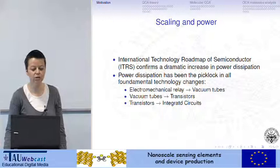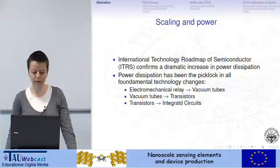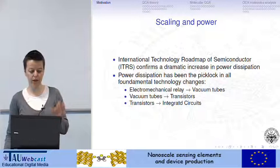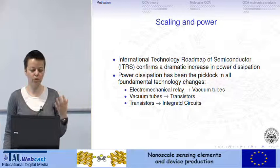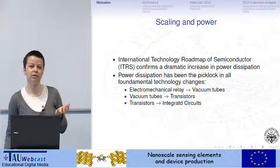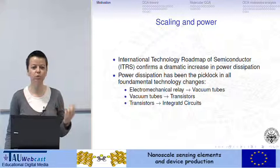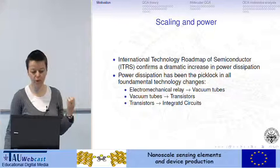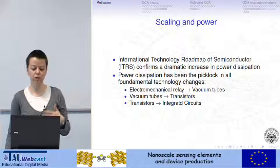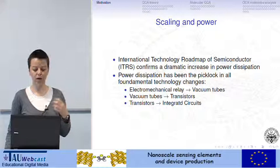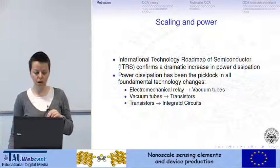If we think briefly at the history of computation, we can see that power dissipation has been a bottleneck in all the fundamental technology changes. The first computers were mechanical, and then we had a great improvement with vacuum tubes. Power consumption was the bottleneck to move from one technology to the other — the same kind of step happened when from vacuum tubes we stepped to transistors, and after that to integrated circuits based on transistors.